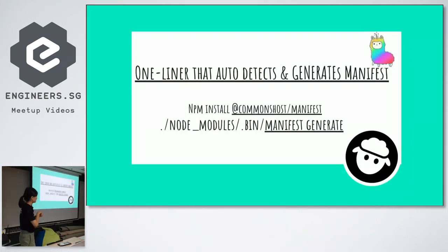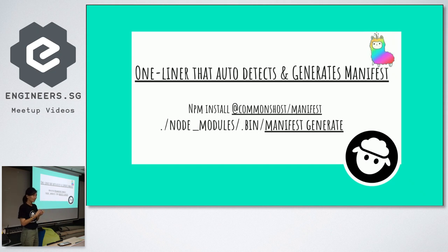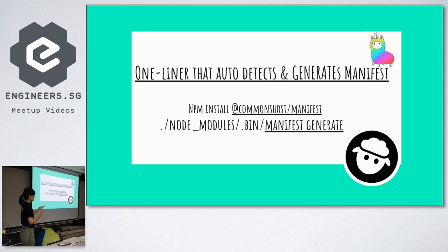My friend and I built a one-liner for this. If you want to use this tool to make your web load faster with HTTP/2 Server Push, you can install @commonsource/manifest and then type manifest generate. It will parse through the files, collect all those dependencies, and automatically build the manifest file for you.